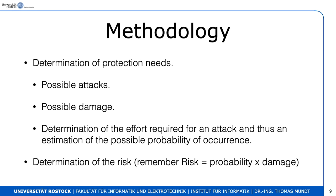The determination of protection needs is another point. We look at possible attacks, possible damage, and determine the effort required for an attack, giving an estimation of the probability of occurrence. In general, risk equals probability times possible damage. For example, an asteroid crashing into your hometown has very low probability but devastating damage, so the overall risk is still very low. A plane crash might be a higher risk. A fire might be an even higher risk because the probability is much higher.